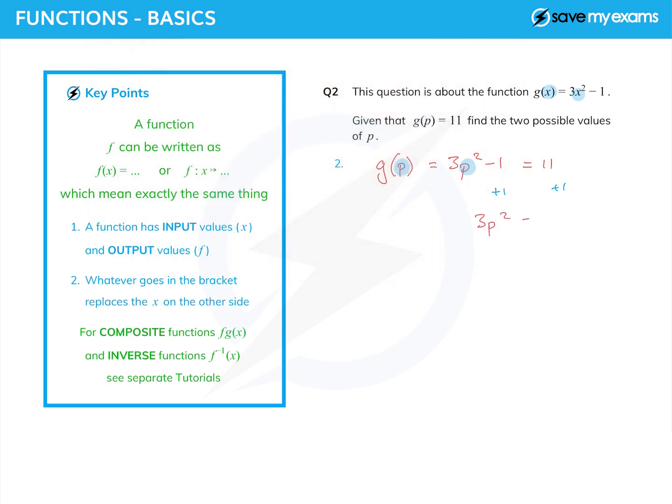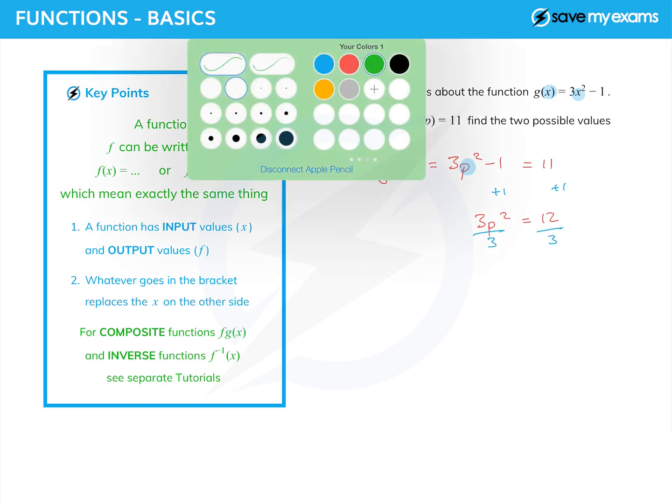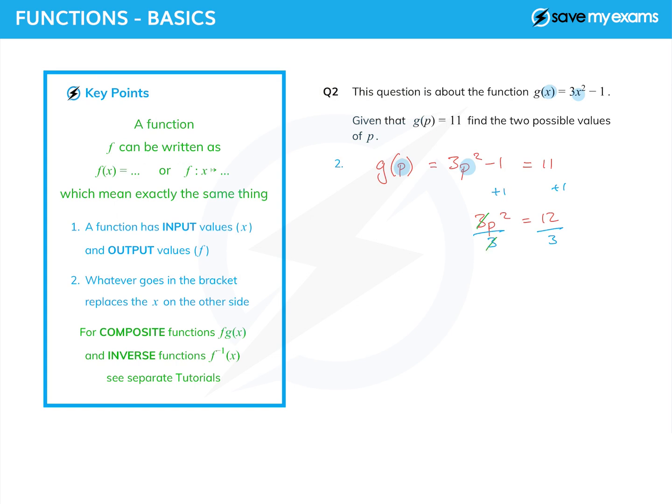So I've got 3p² equals 12, and now I'm going to follow the usual rules. I'm going to get p² on its own by dividing by 3. That means the threes cancel on the left, that's rather the point of doing that, and so p² equals 4.